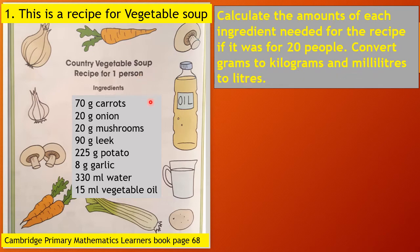Take note that this ingredient is good for one person. What about if we are going to find the recipe for two people? To find the recipe for two people, we have to double the amount of each ingredient. So if the question is for 20 people, we are going to multiply the amount of each ingredient by 20.